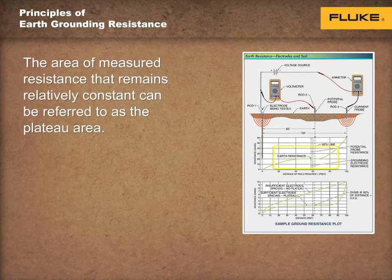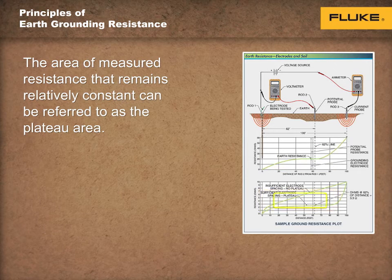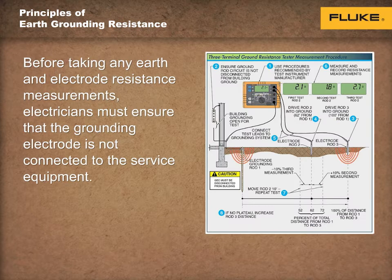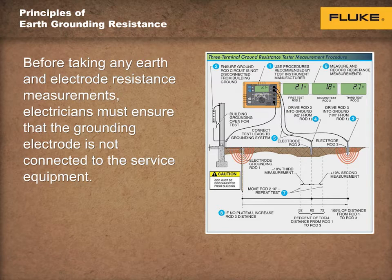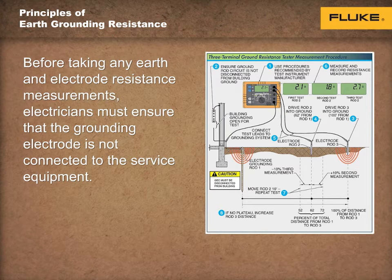A ground resistance meter includes a power supply, a voltmeter, a current measurement device, a display for the direct readout of resistance, and all the required components for measuring earth resistance or the resistance to ground value of a grounding system.